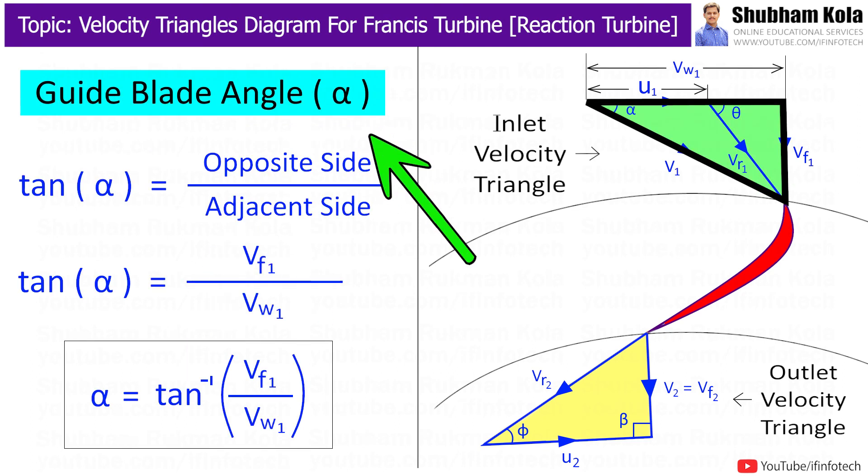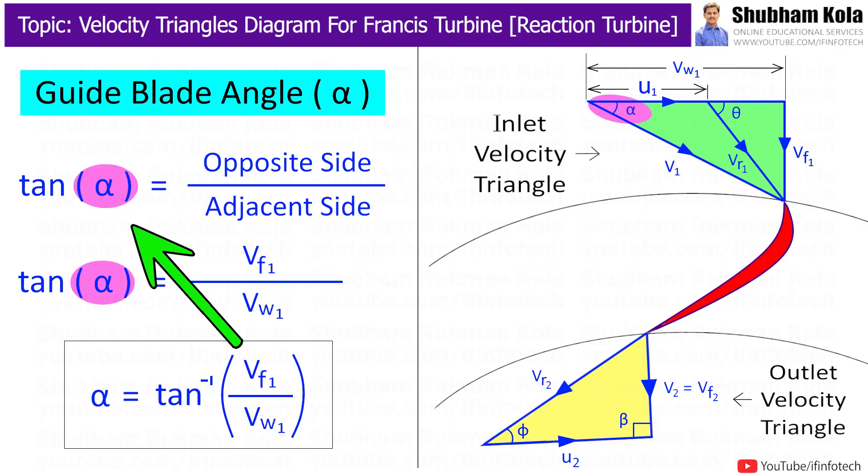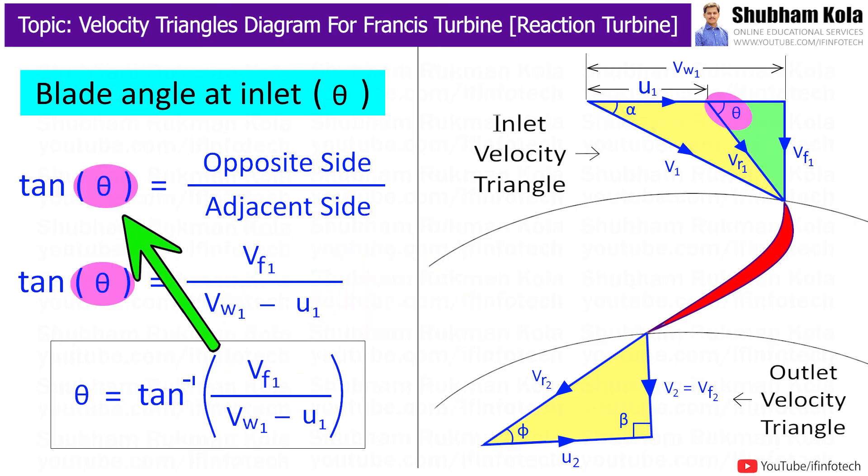Next is velocity of whirl Vw1 can be calculated from the equation of hydraulic efficiency. Next is to calculate guide blade angle alpha and the blade angle theta from inlet velocity triangle. So, we are applying the equation of tan alpha that is opposite side by adjacent side. The opposite side is Vf1 and the adjacent side is Vw1 or to find tan theta the opposite side is Vf1 and the adjacent side is Vw1 minus u1.